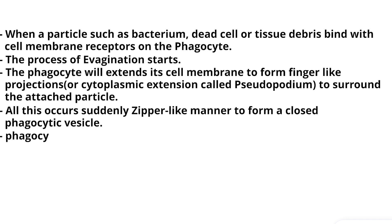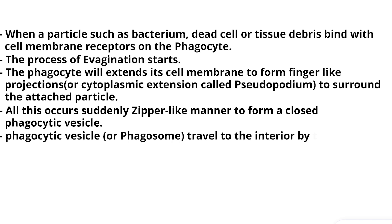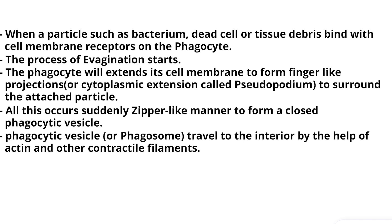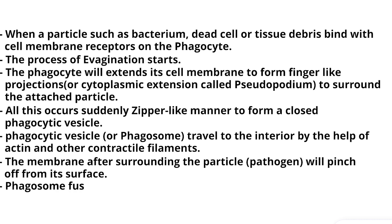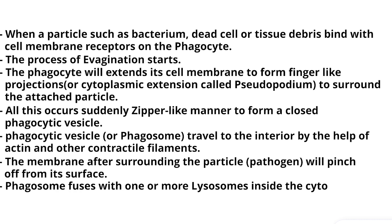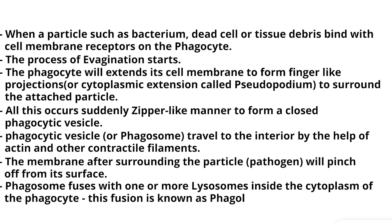The phagocytic vesicle, or phagosome, travels to the interior by the help of actin and other contractile filaments. The membrane, after surrounding the particle or pathogen, will pinch off from its surface. The phagosome fuses with one or more lysosomes inside the cytoplasm of the phagocyte. This fusion is known as a phagolysosome.